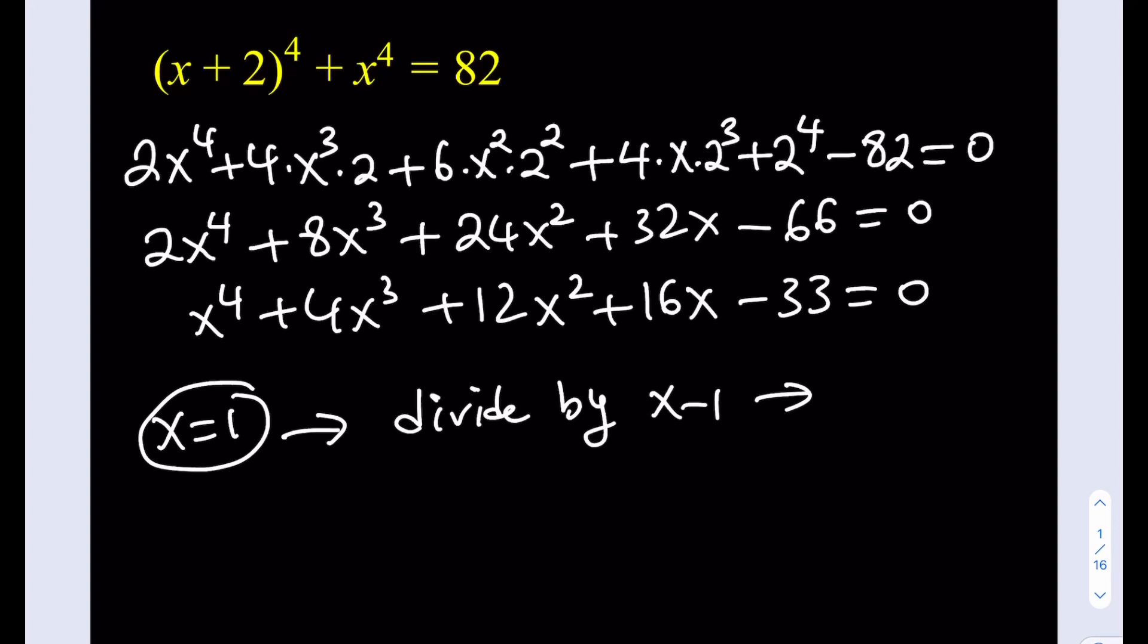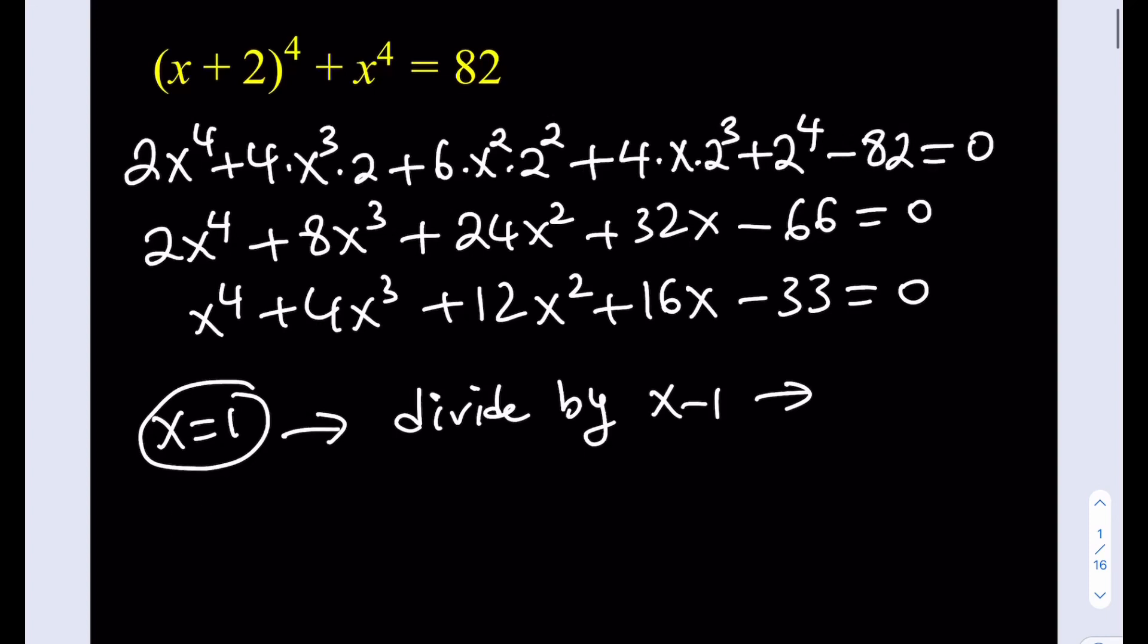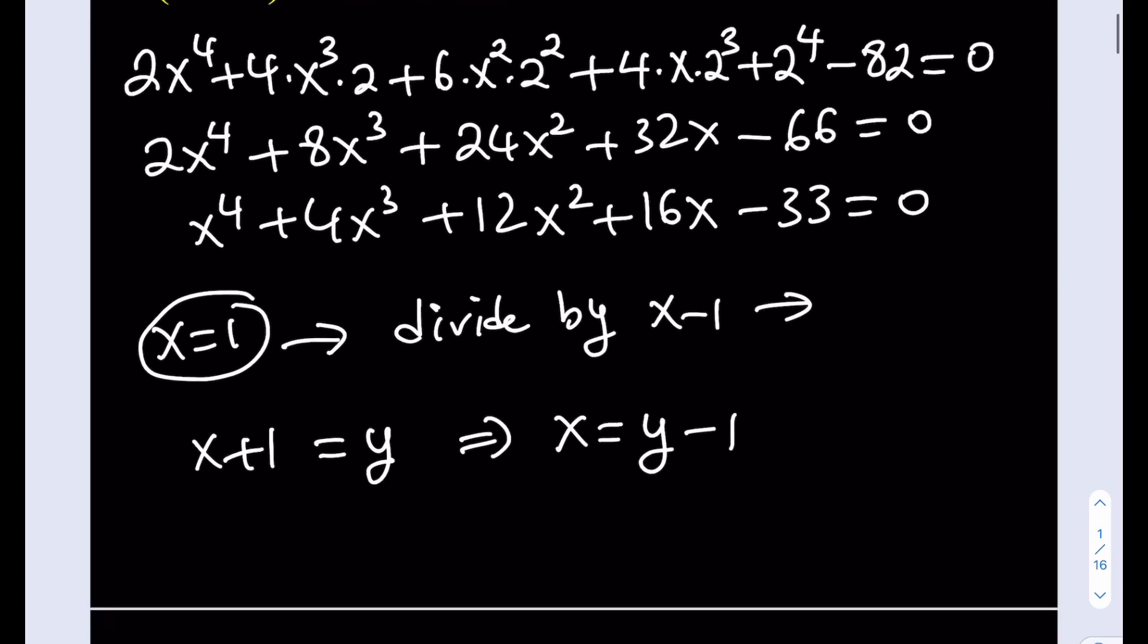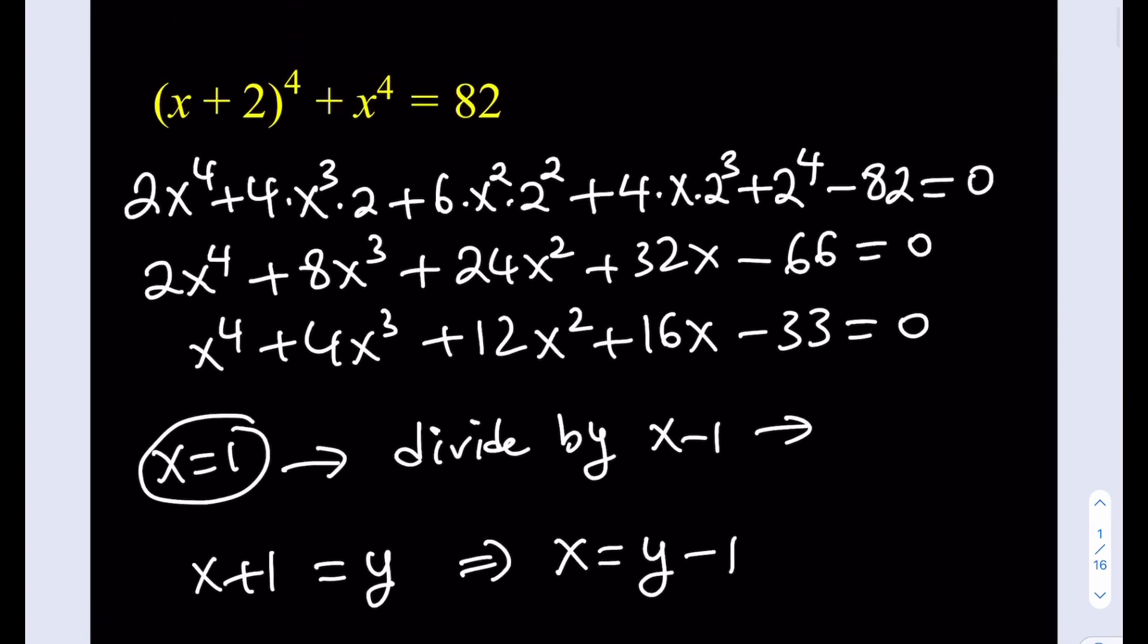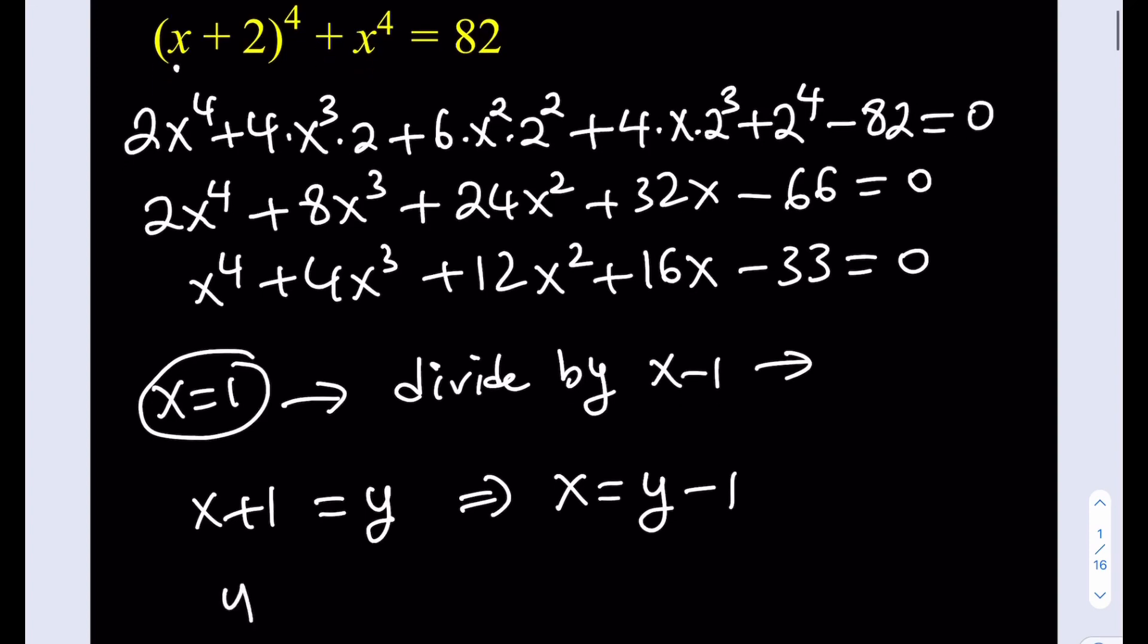By assuming that suppose x plus 1 is equal to y. In other words, I'm replacing x with y minus 1. Let's go ahead and do it and see what happens. If x is equal to y minus 1 here, then I'm going to be getting what? y plus 1 to the fourth power. And from the other expression, I'm going to get y minus 1 to the fourth power. And the sum is going to equal 82.